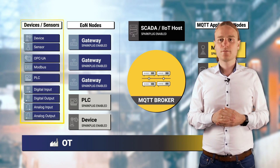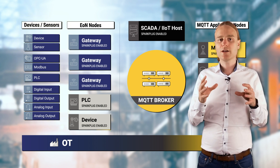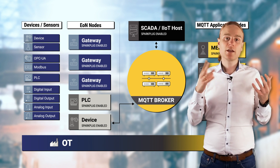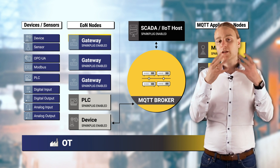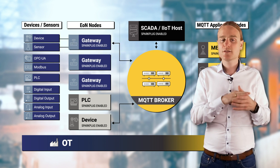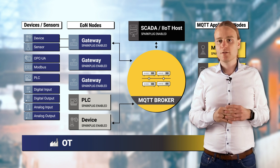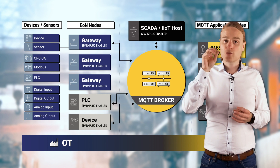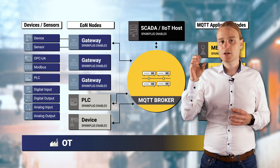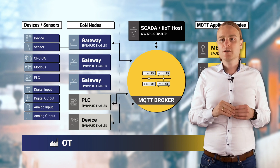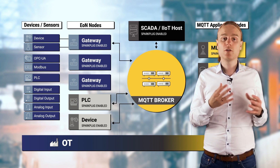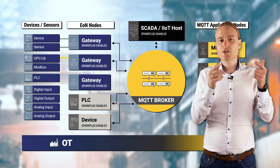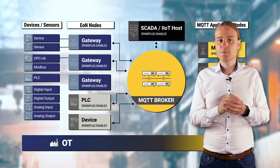Number three: devices. In a Sparkplug infrastructure you can have devices that can speak MQTT Sparkplug directly, or devices and sensors that are not able to speak MQTT directly. If you have a PLC that is able to speak MQTT Sparkplug directly, then you can absolutely connect directly to the Sparkplug infrastructure — meaning directly to the MQTT broker. If you have a device or sensor that speaks a proprietary protocol or other open protocols like OPC UA, then you need an edge of network node in between to bridge the proprietary technology to the open MQTT Sparkplug infrastructure.